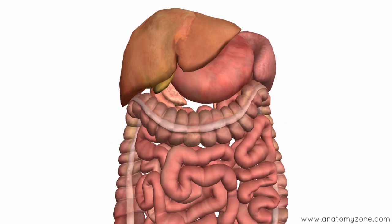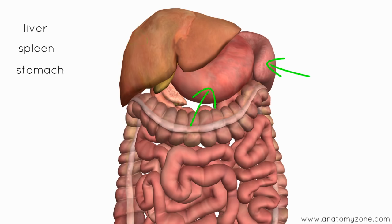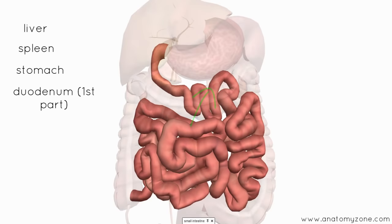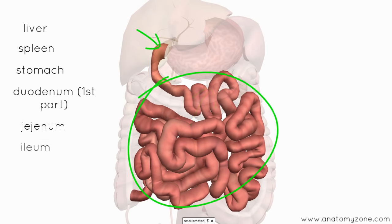So which organs are intraperitoneal? We've got the liver, the spleen, the stomach, the first part of the duodenum. We've got the jejunum and ileum, so all these loops of intestine.